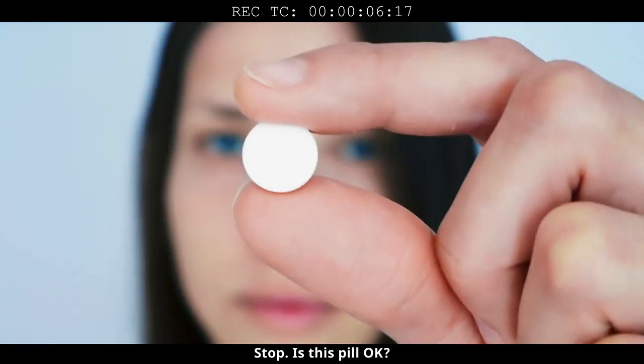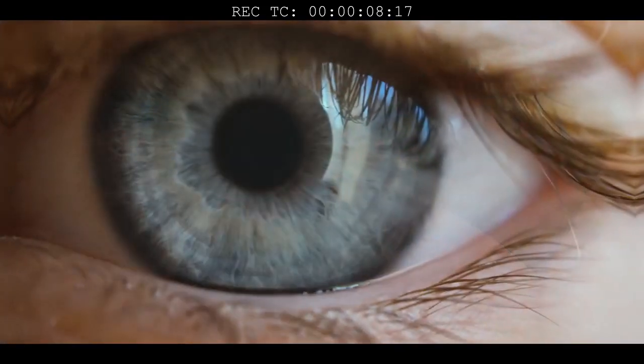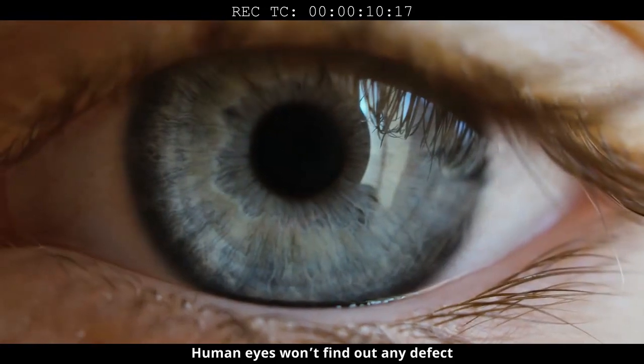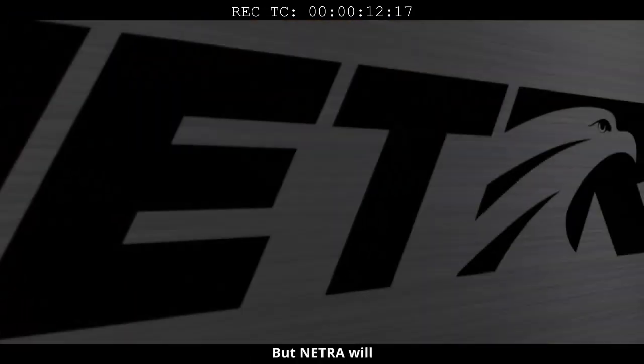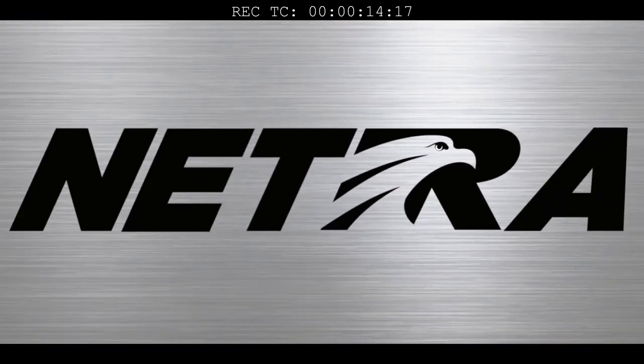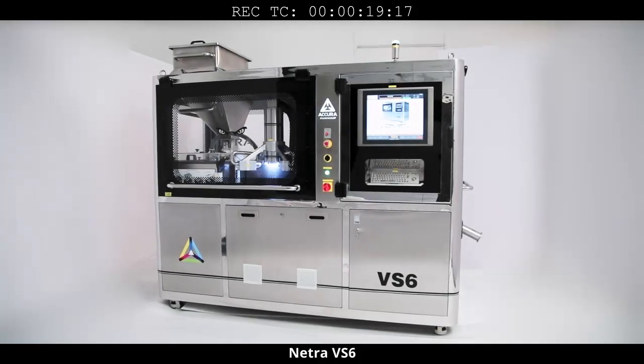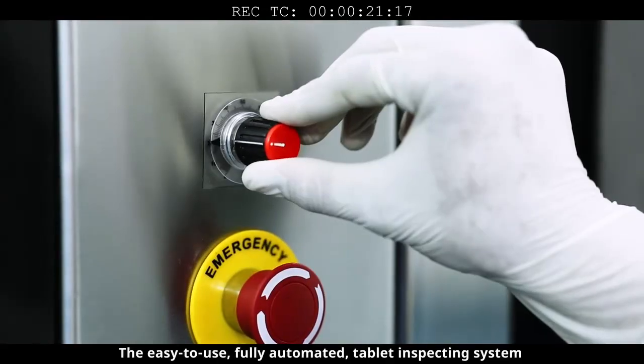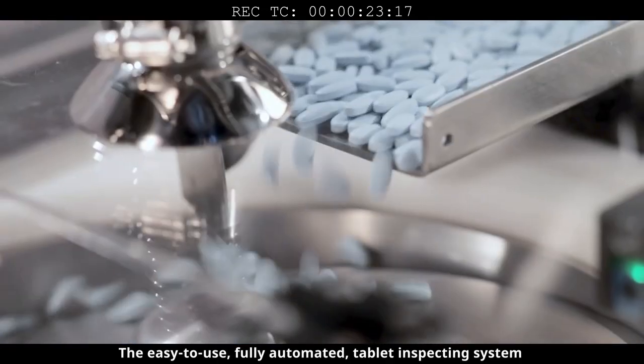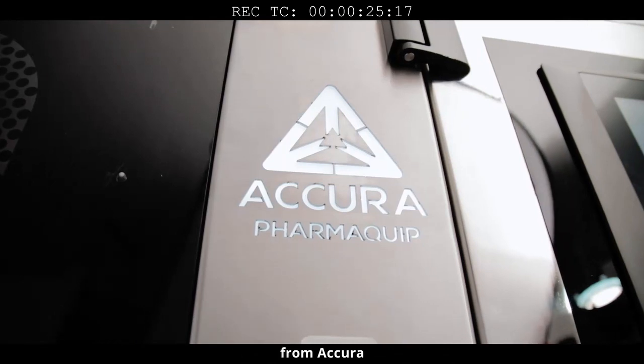Is this pill okay? Human eyes won't find out any defect, but Netra will. Faultless, precise, consistent. Netra VS6, the easy to use, fully automated tablet inspecting system from Acura.